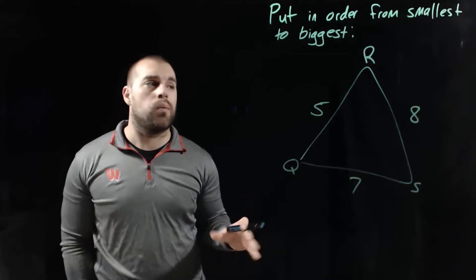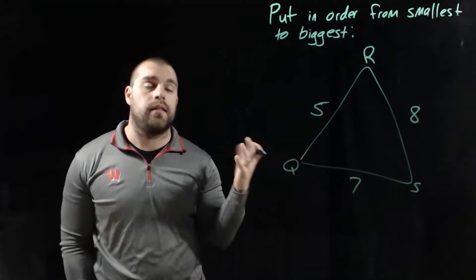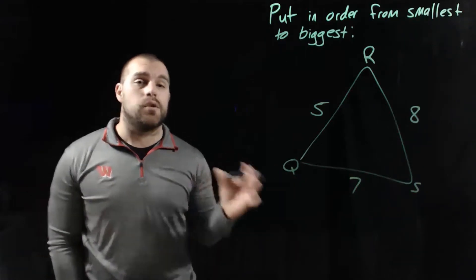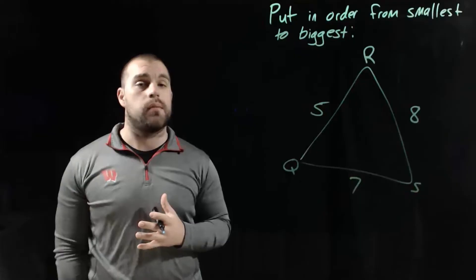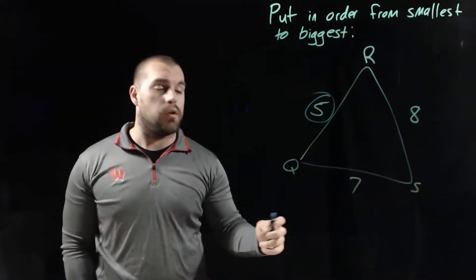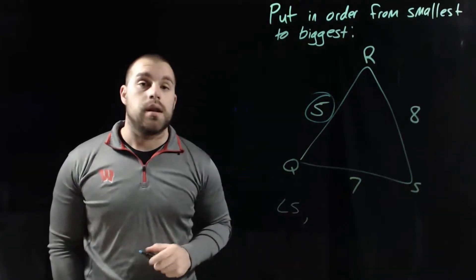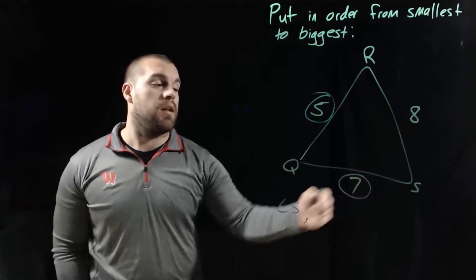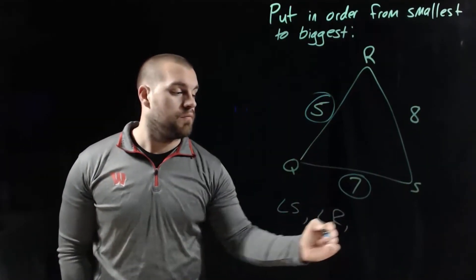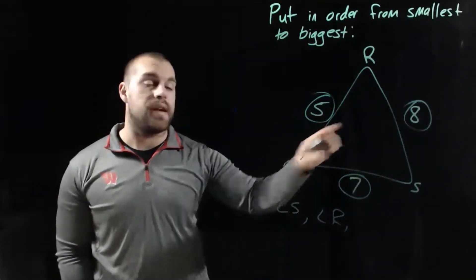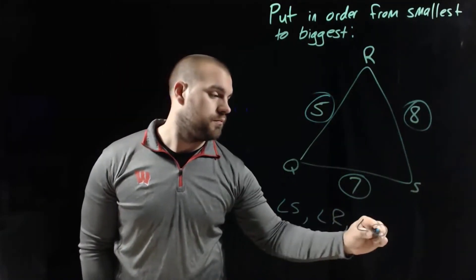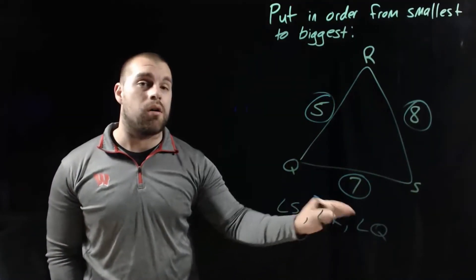Let's look at this example where we're given triangle QRS with the side lengths, and we want to put the angles in order from smallest to biggest. The smallest angle is always across from the shortest side. The shortest side has a length of five, so angle S should be the smallest. The next side has a length of seven, so angle R is next. The longest side of eight is across from angle Q, making angle Q the biggest. So from smallest to biggest: angle S, angle R, then angle Q.